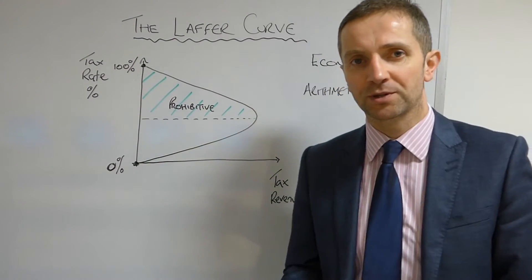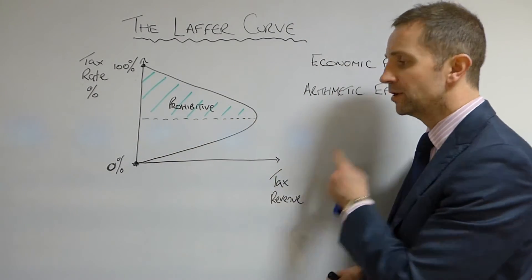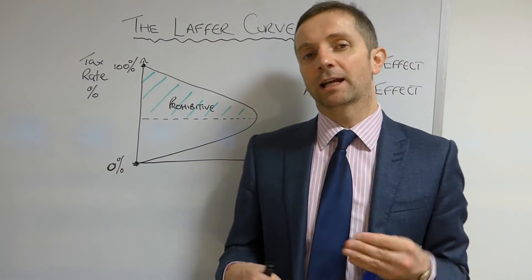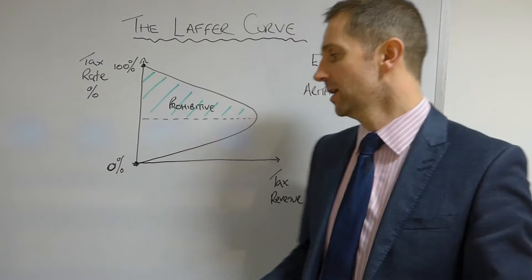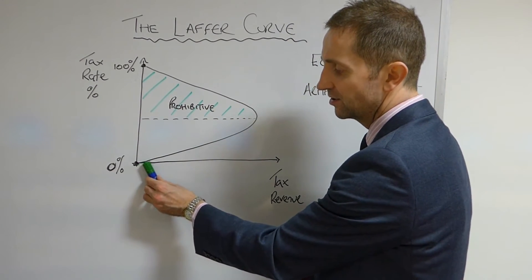What about the flip side of the same coin? What if the tax rate was zero percent? Well of course if the tax rate was zero percent, then the government from its point of view would collect zero income tax.